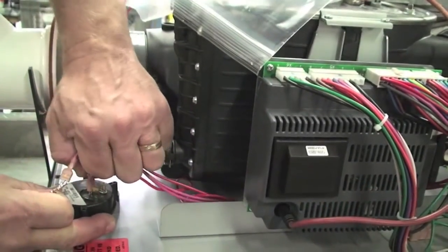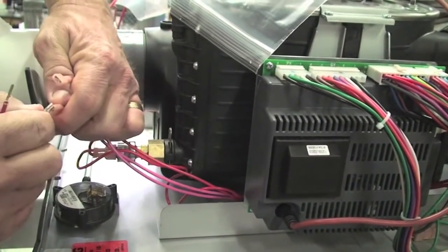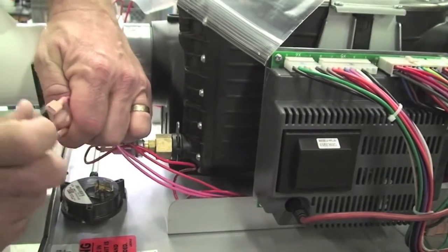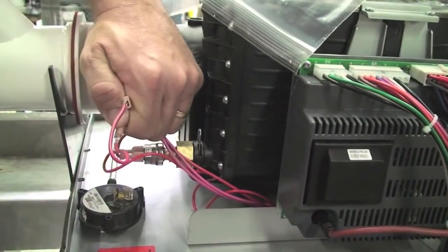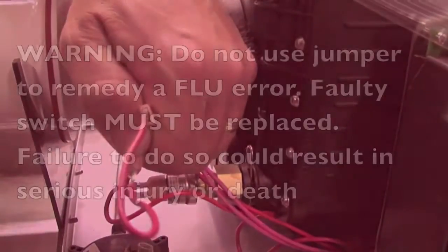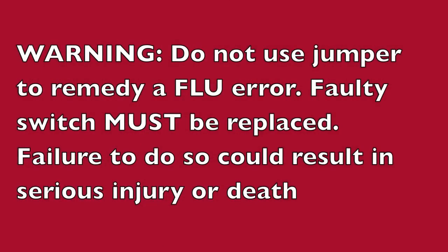Second, if the exhaust venting is fine, next jump out the switch to see if the unit resets and runs. Monitor the operation after replacing the switch, but never leave the switch jumped out as this could lead to an unsafe condition.